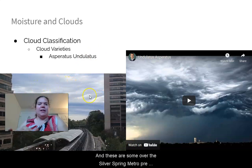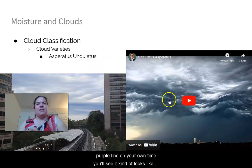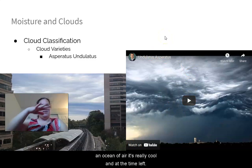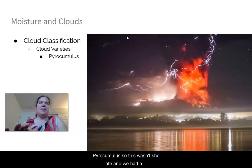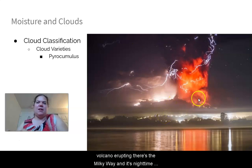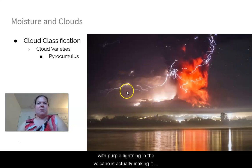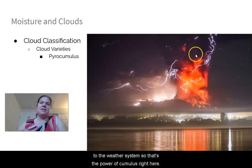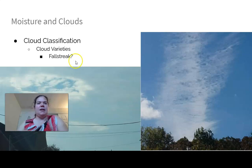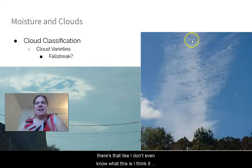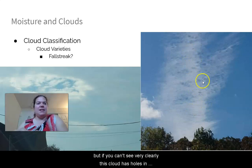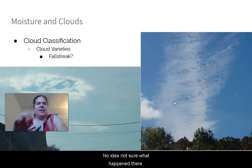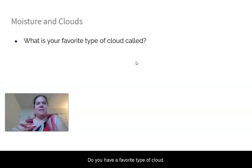Asperitas clouds are caused by gravity waves and are a more recent addition to the cloud atlas — they look like an ocean of air. Pyrocumulus clouds can form over volcanoes or large fires, creating their own weather system. Fall streaks occur when something punches through a cloud layer causing it to collapse and precipitate. There are also unusual clouds with holes, possibly from botched cloud-seeding attempts.